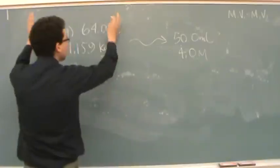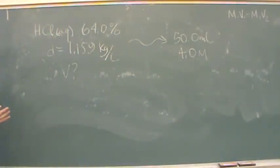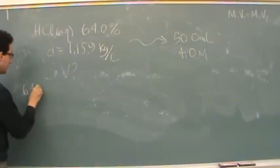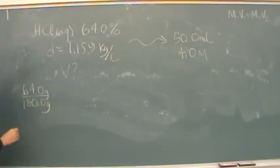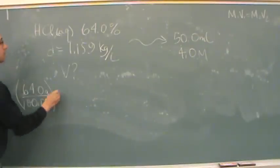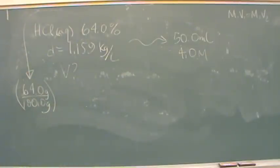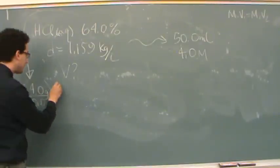So what I'm going to do is mess with this stuff right here in order to get a molarity. So 64% means there are 64 grams for every 100 grams - 64 grams of HCl for every 100 grams of solution. This is going backwards from the percent mass to get to grams. And then I'm going to use the density.